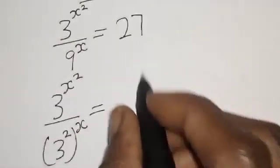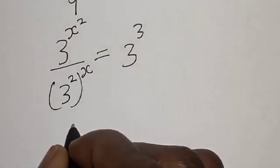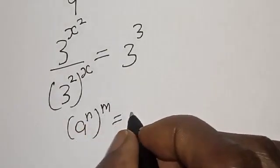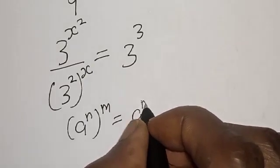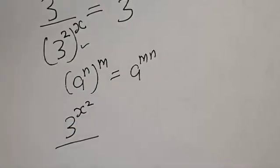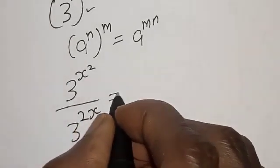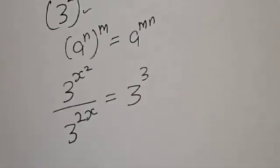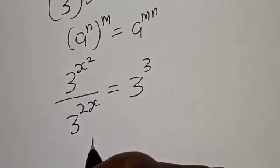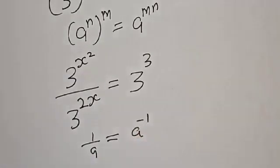This is equal to 27, which is 3 raised to power 3. Note that if you have a raised to power n, raised to power m, this is the same thing as a raised to power m times n. So 3 to the s squared divided by 3 to the 2s equals 3 to the power 3. Also note that 1 over a is equal to a raised to power minus 1.